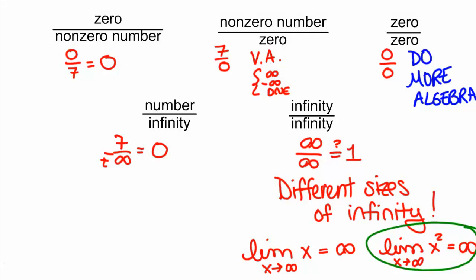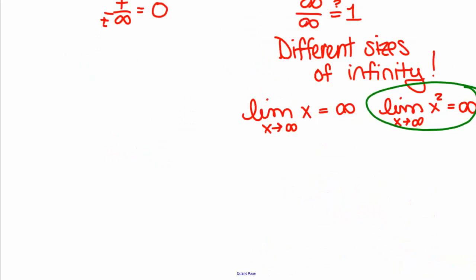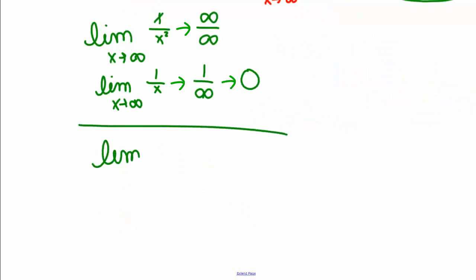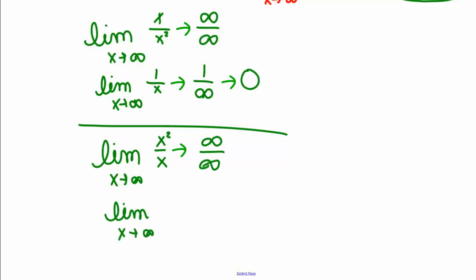So what this means is that if you have infinity divided by infinity, you could actually have all kinds of different answers. For example, the limit as X goes to infinity of X over X squared looks like infinity over infinity, but if you simplify algebraically, it's the limit of 1 over X — a number divided by infinity — so it's just 0. On the other end of the spectrum, the limit as X goes to infinity of X squared over X is also infinity over infinity, but when you reduce that algebraically, you get X over 1, which is infinity over 1, which is infinity.